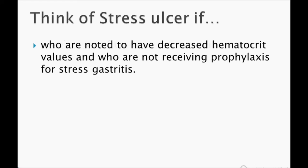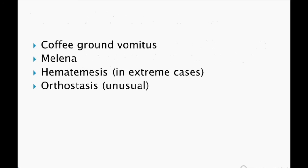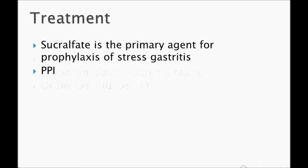The mechanism is breakdown of the mucosal barrier. Think of stress ulcer if a patient admitted to the hospital complains on day two of decreasing hematocrit and severe epigastric pain, especially if they are not on a PPI. Coffee ground vomitus, melena, hematemesis, and orthostasis can also be present. Sucralfate is the primary agent for prophylaxis of stress gastritis — that's what you need to remember. PPI can also be given.